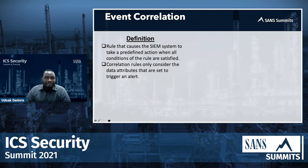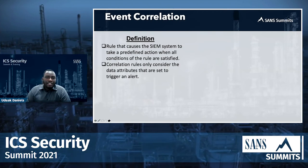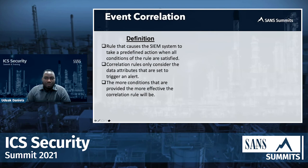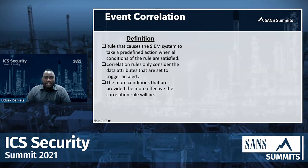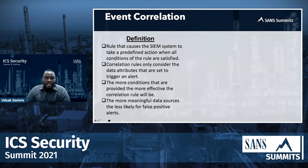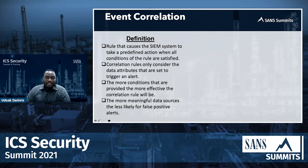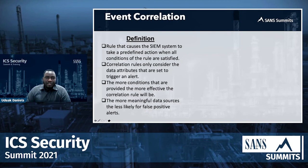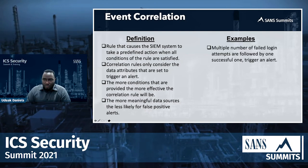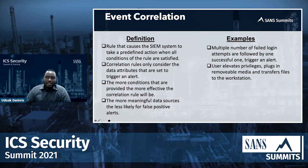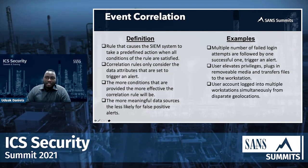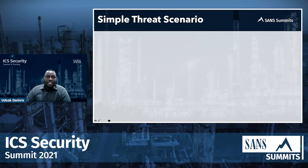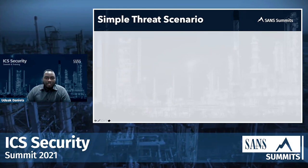For event correlation, correlation rules may consider data attributes that are set to trigger an alert. Meaningful data sources are less likely to produce false positives — false positives are really bad because once analysts get a lot of them, most just stop looking. Examples of standard things to look for include failed logins, user elevates privileges, and user accounts logged in multiple times.